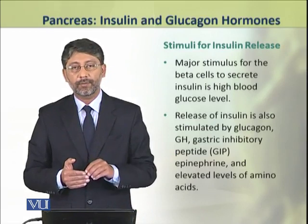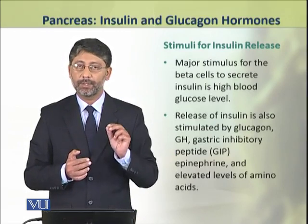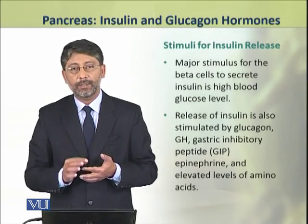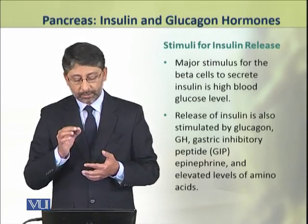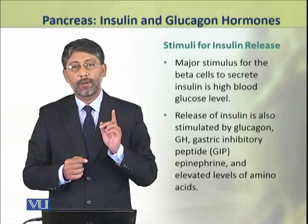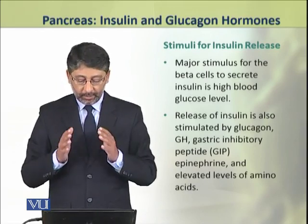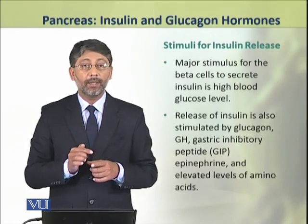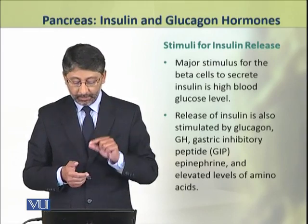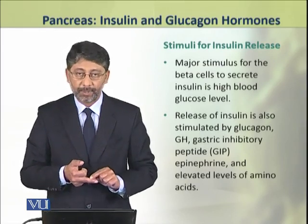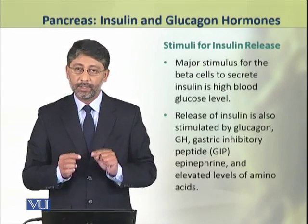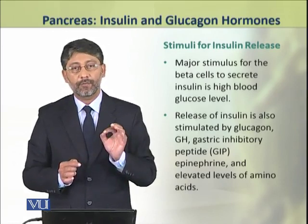We shall now discuss insulin and glucagon hormones in detail. First, we shall discuss the stimuli for the release of insulin hormone from the pancreas. The major stimulus for the beta cells to secrete insulin is high blood glucose level. Release of insulin is also stimulated by glucagon, growth hormone, gastric inhibitory peptide (GIP), epinephrine, and elevated levels of amino acids.